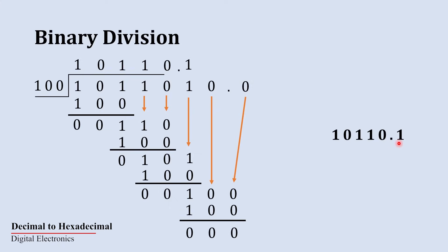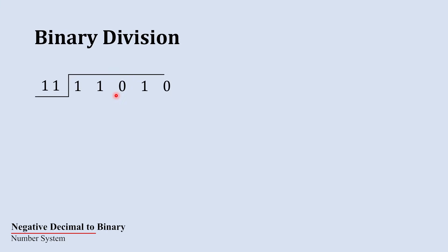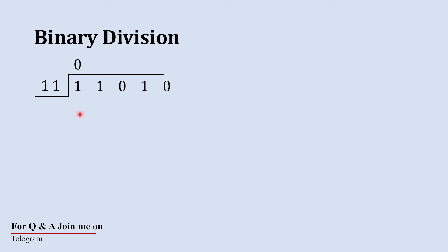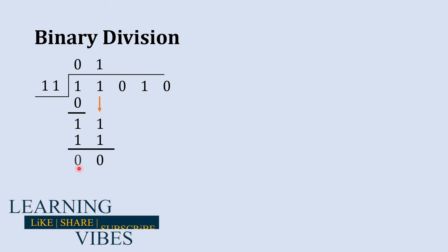Now we'll see one more, even more complex level of binary division. Starting with the most significant bit: is this digit greater than divisor 11? No, so multiply 11 by 0 and write 0. Bring the next digit down to get 11. Is 11 equal to or greater than 11? Yes. One 11 is 11. Subtract to get 00.